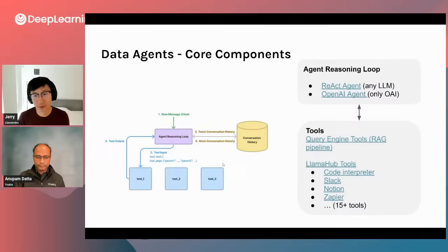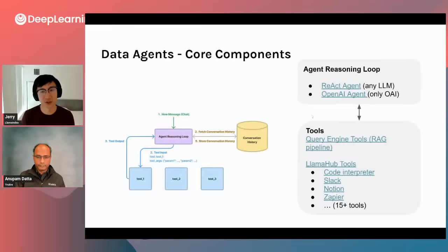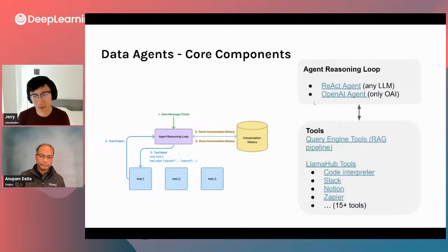Besides ReAct, there are a few other ways to perform agent reasoning. One way is a function calling loop over the OpenAI agent, where the API service handles and decides what functions to call given your inputs. There are also other algorithms like tree of thought, plan and execute, and a few others — several papers come out at conferences every year covering these.